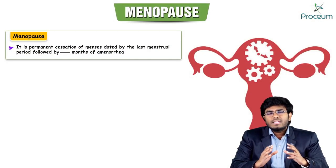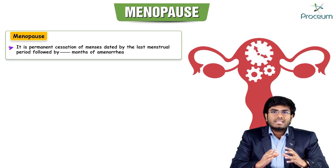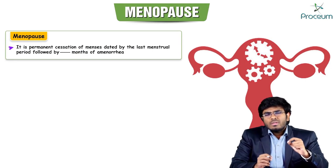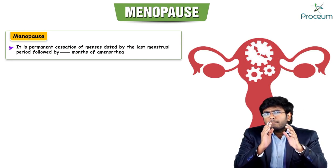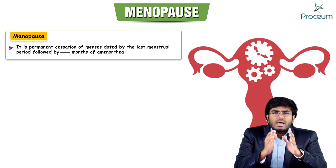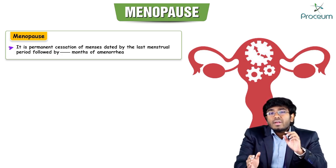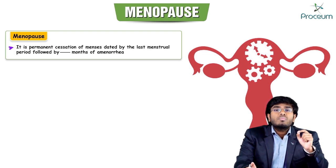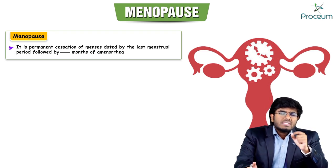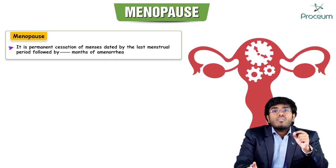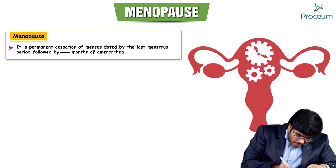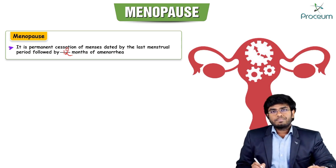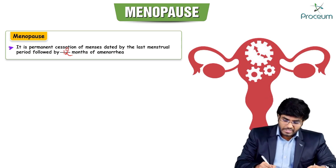In this video, let's discuss the topic of menopause and hormone replacement therapy. Menopause means complete cessation of menses for at least 12 months. In other words, 12 months of amenorrhea from the last menstrual period is regarded as menopause in a female.